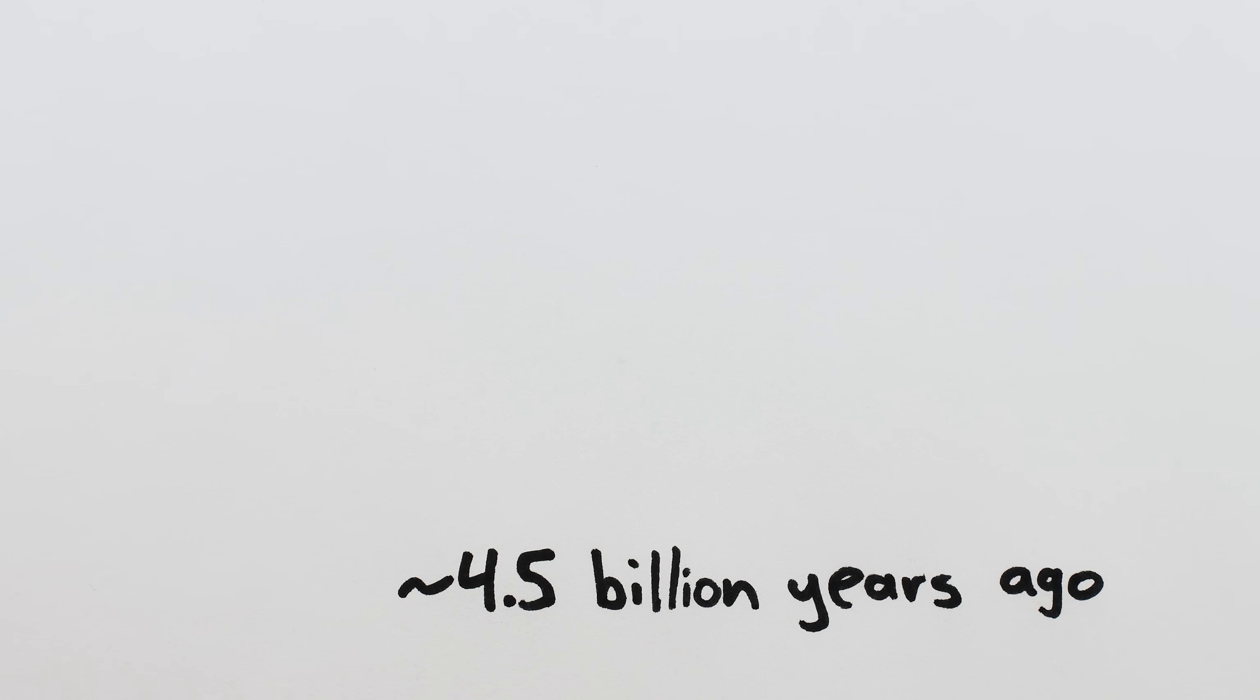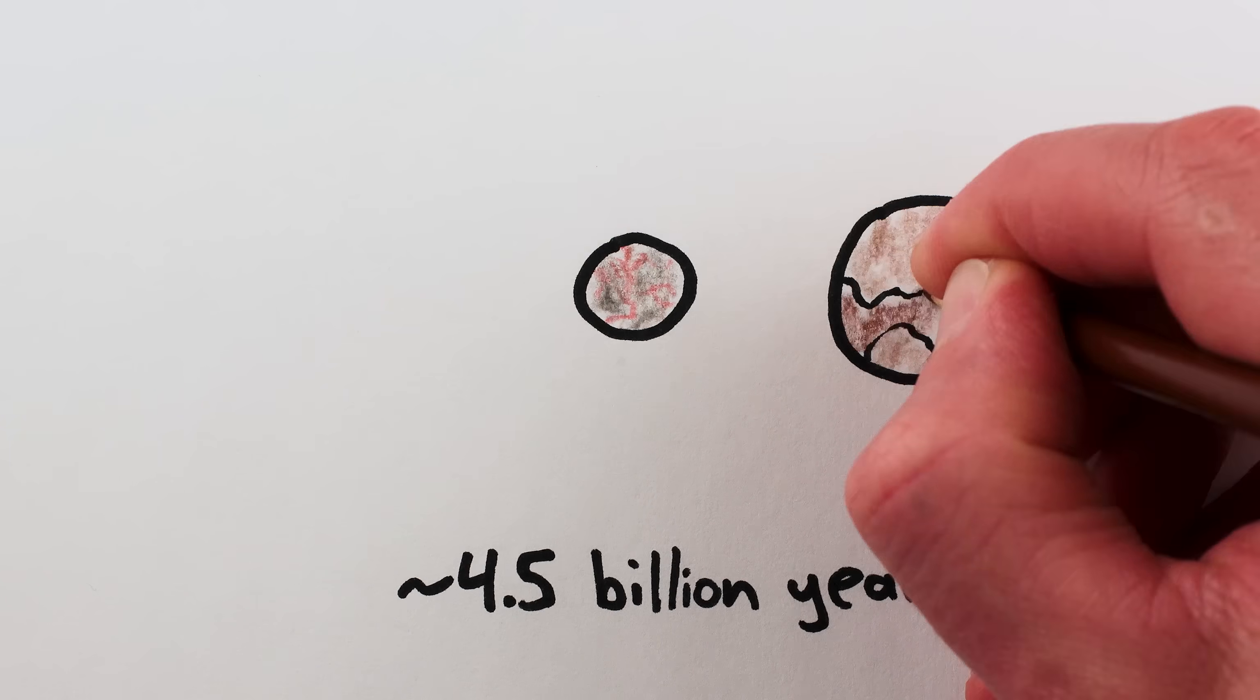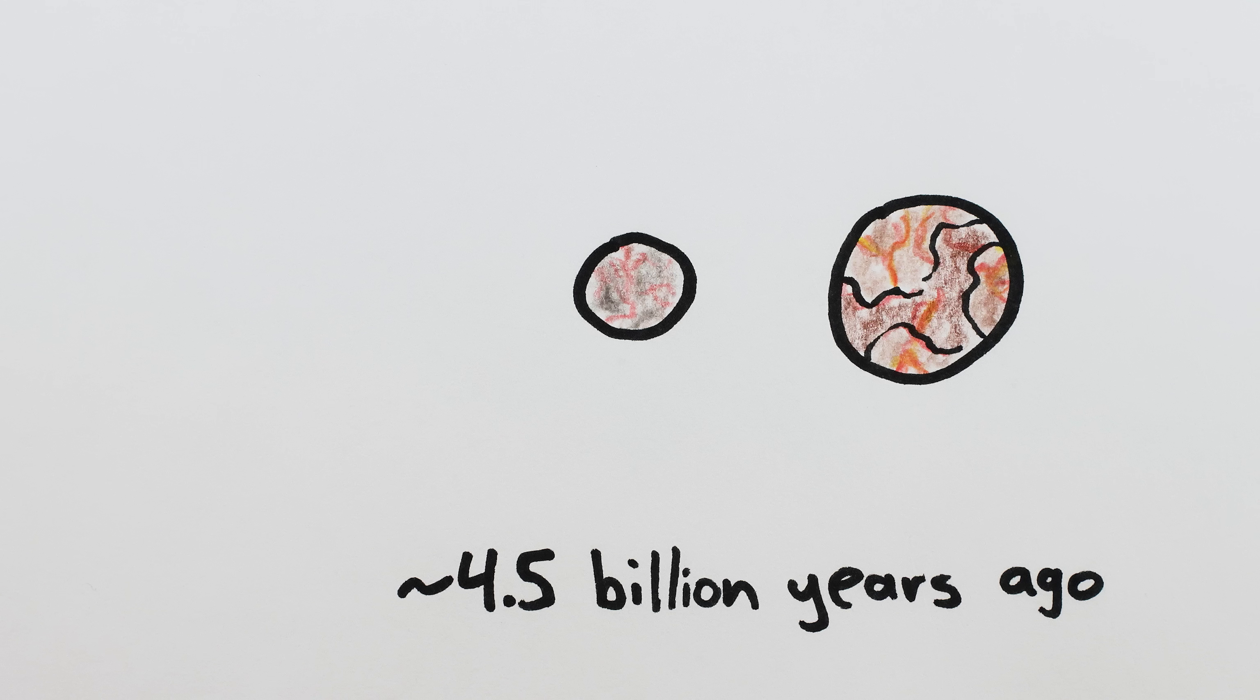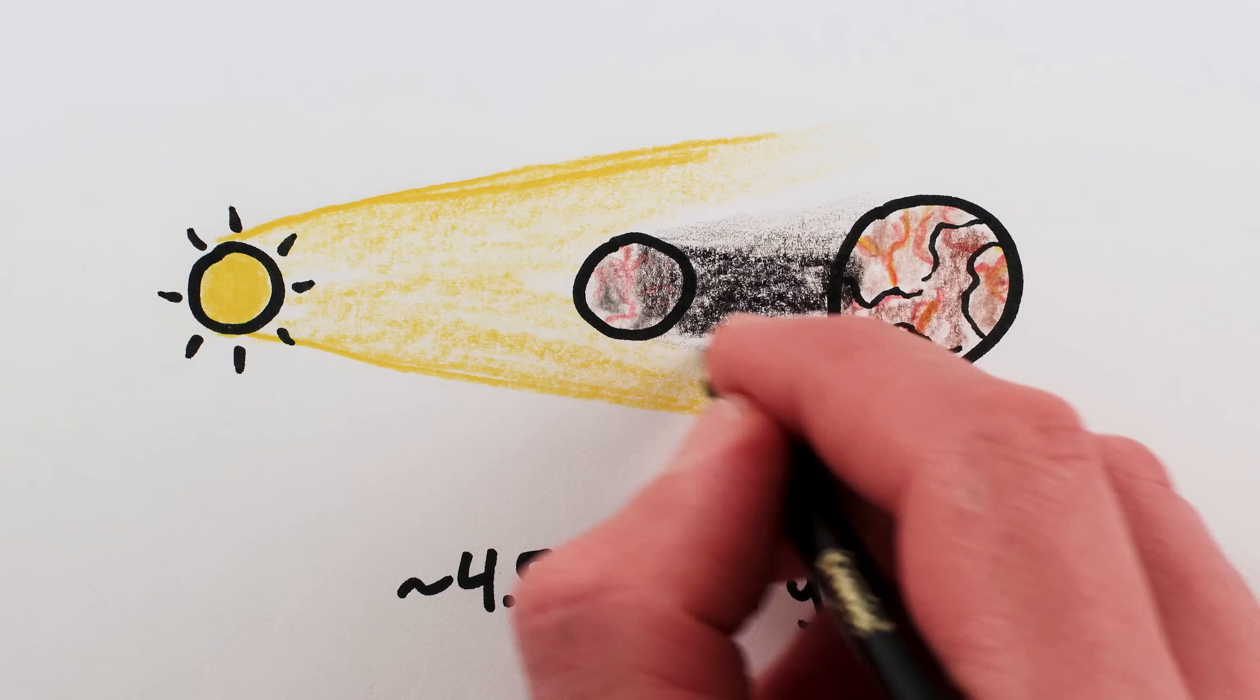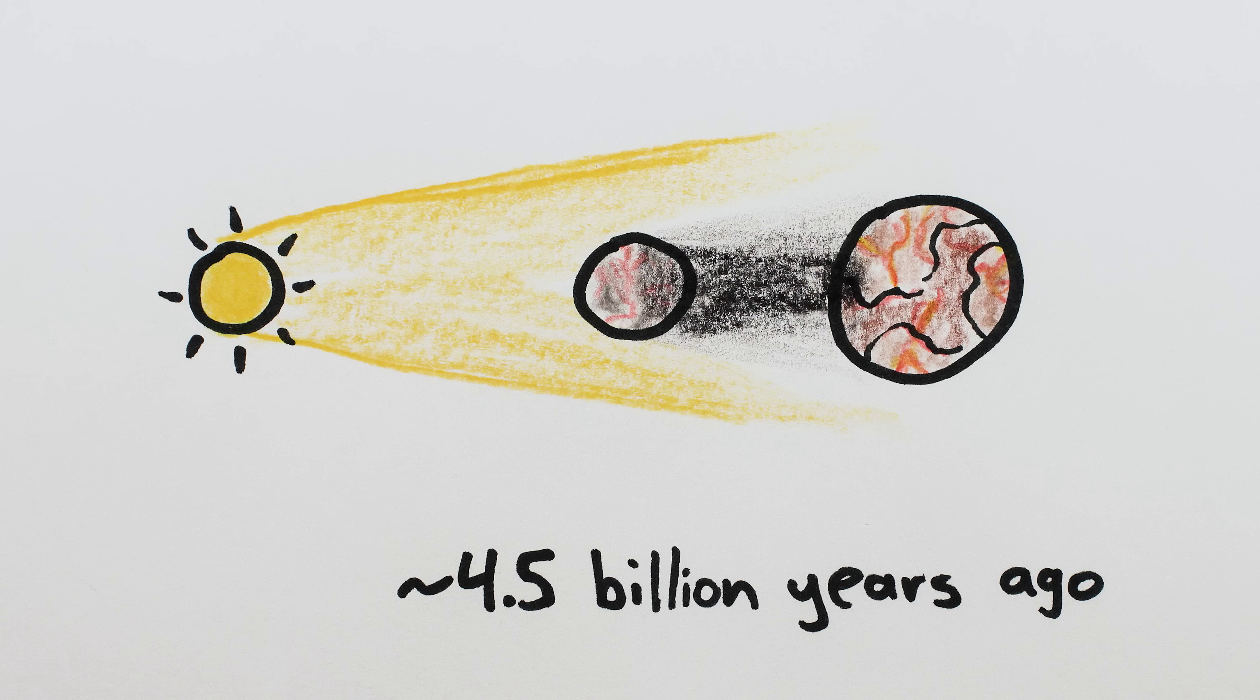The moon formed billions of years ago, and we have good reason to believe it was much closer to the Earth then than it is now. With the moon so close, it was much bigger in the sky. Total eclipses would have been much more common, and much longer and much darker.